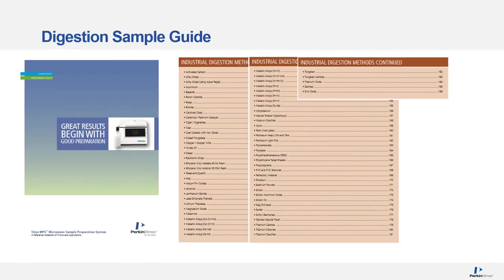To aid with the difficulties of digesting samples, the closed vessel Titan microwave system comes with an expansive sample digestion guide to help with choosing acids, temperatures, and pressures required to digest a range of substances from environmental samples, pharmaceuticals, personal healthcare products, food and beverages, and industrial samples. The industrial section includes many sample preparation techniques for pure metals, alloys, rocks, and ores.